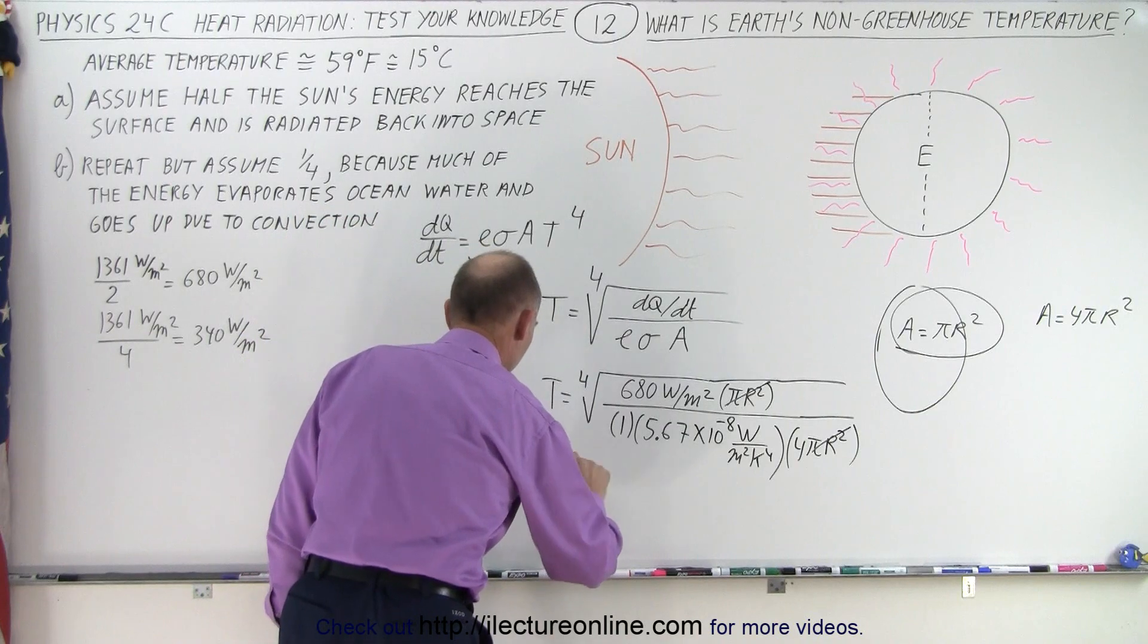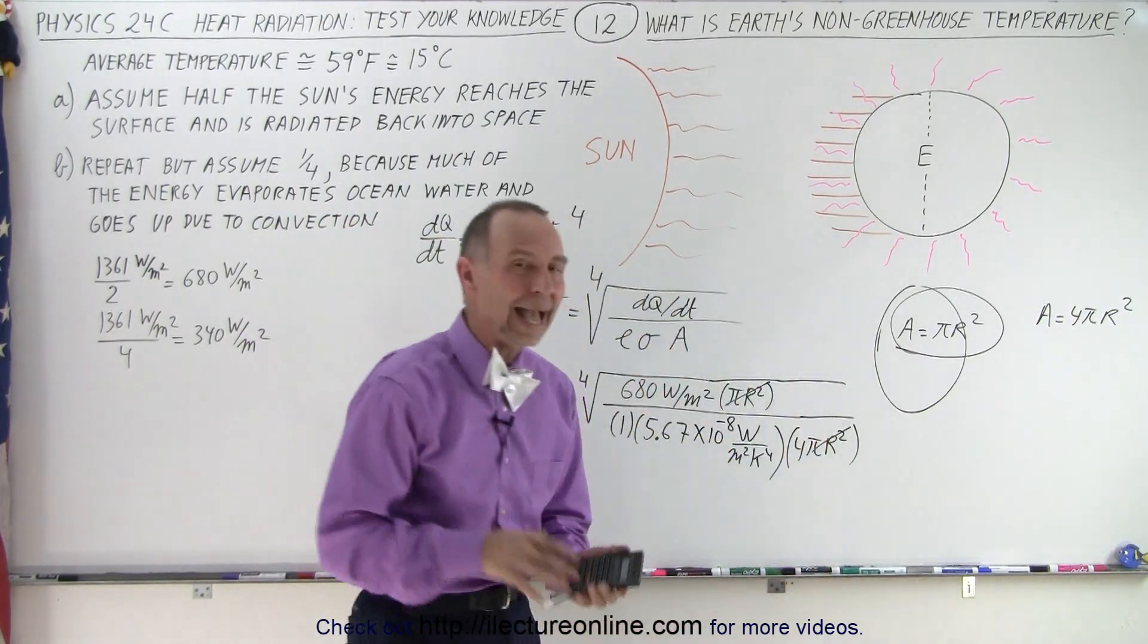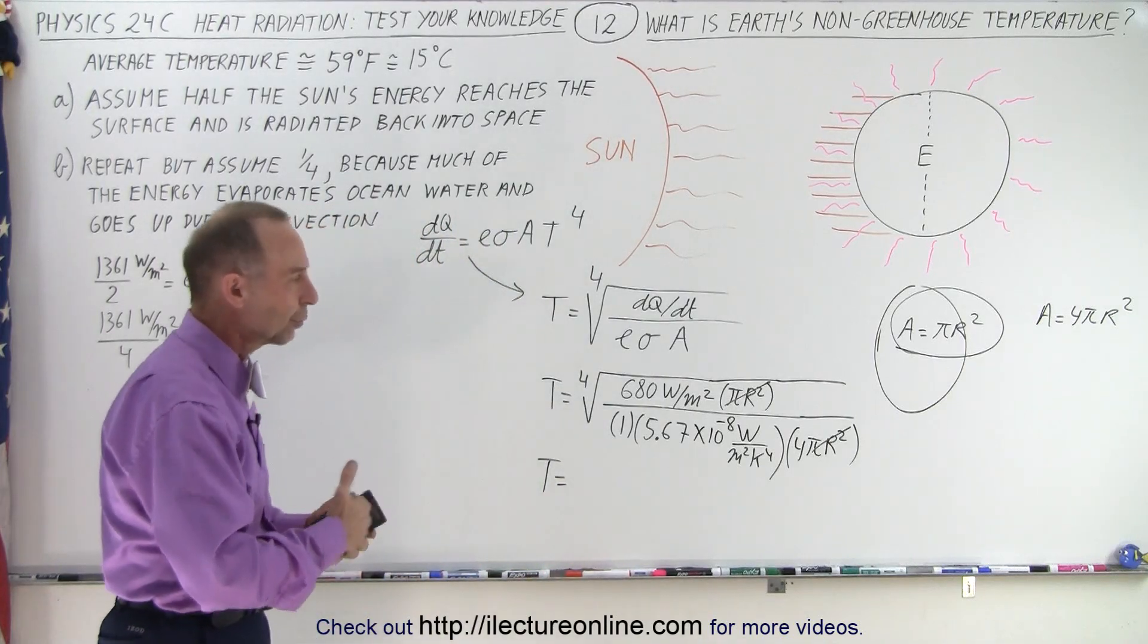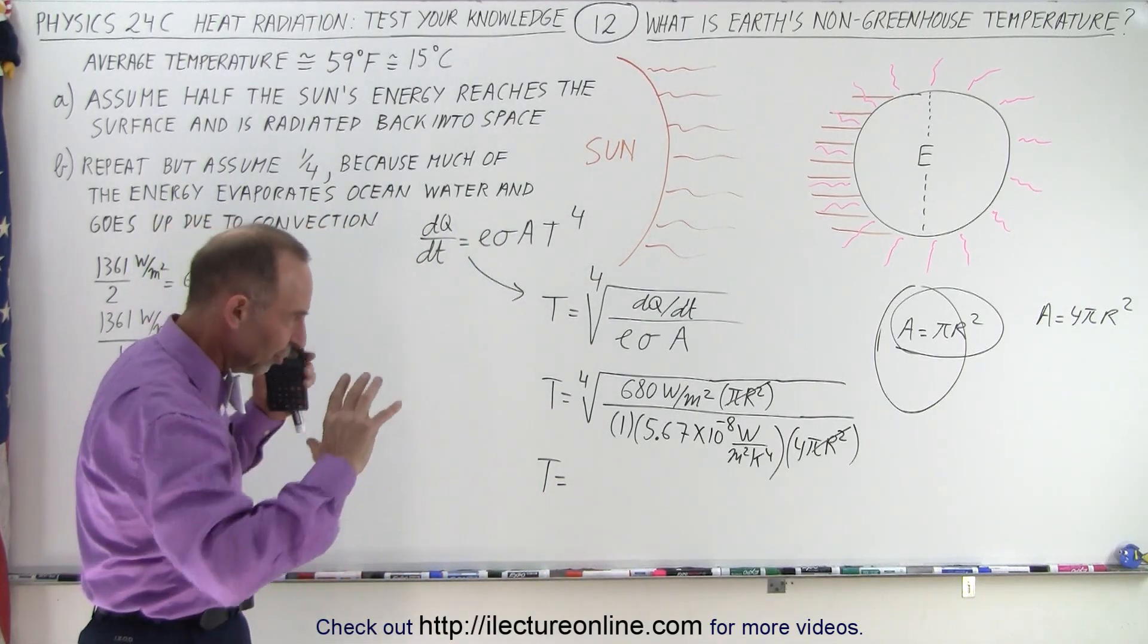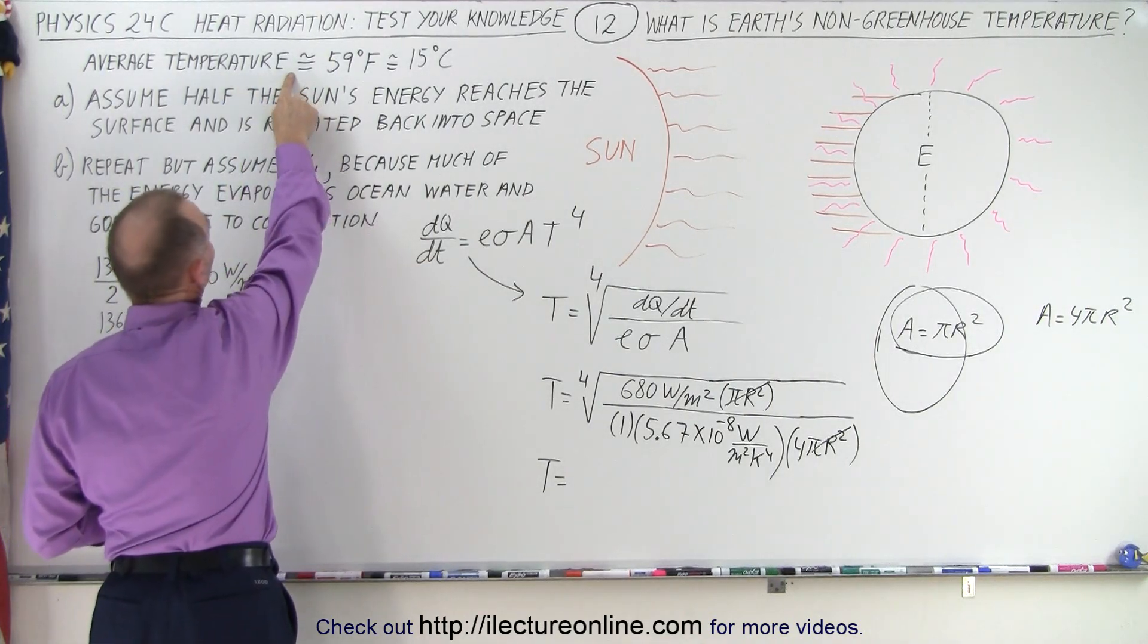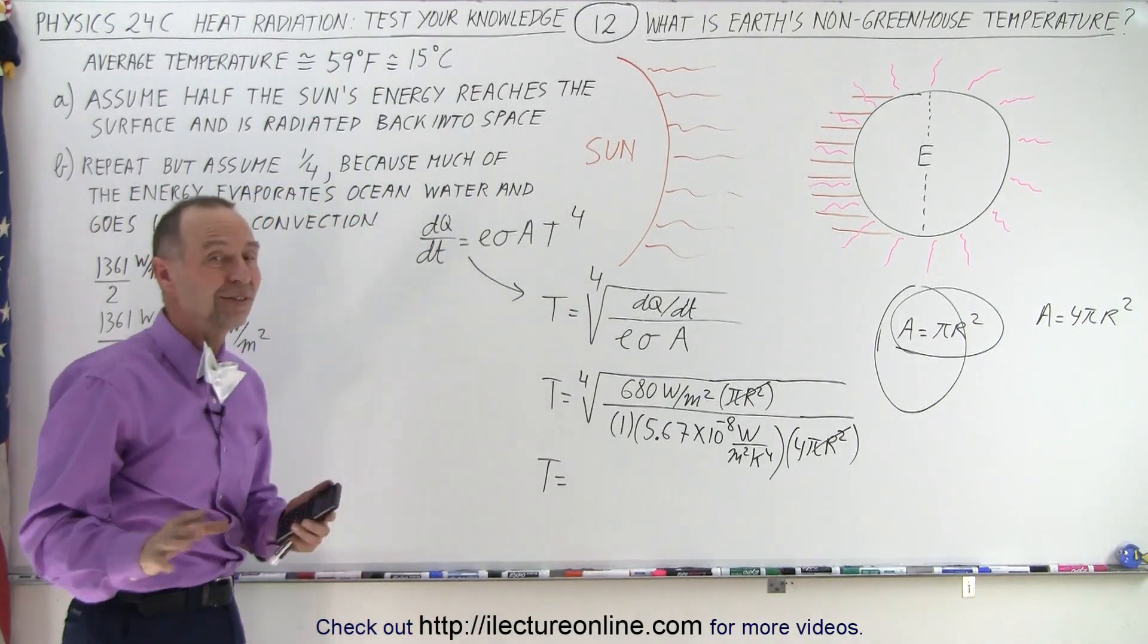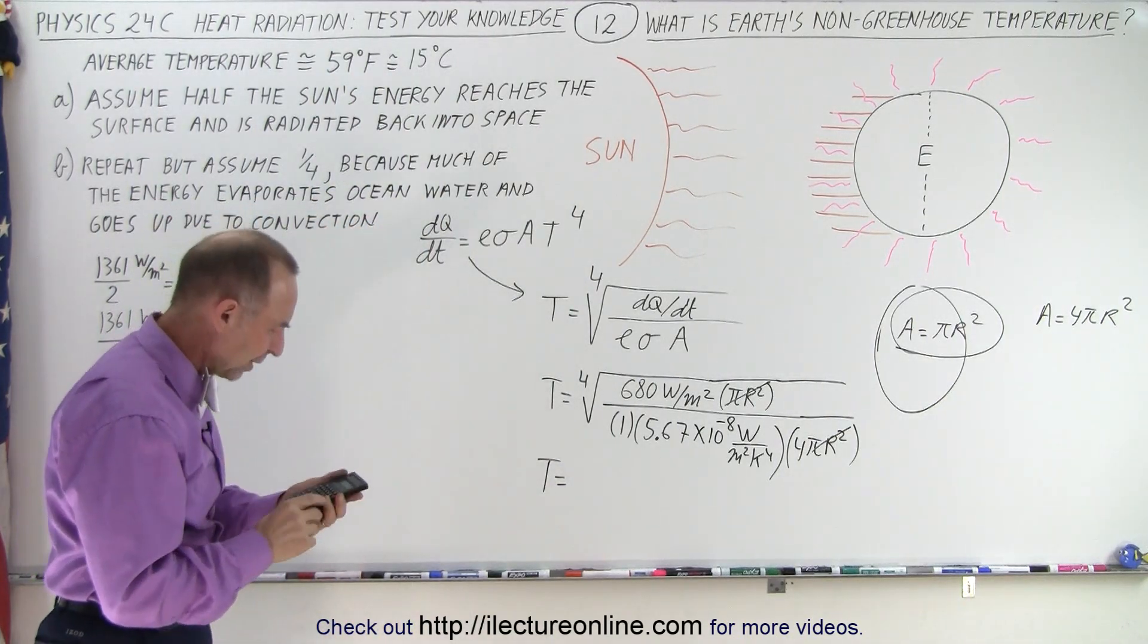And so the temperature is then going to be equal to that would be the average surface temperature of the earth. Of course it changes between winter summer but this is simply the average temperature relative to what it normally is with greenhouse gases which is 59 degrees Fahrenheit. That's about 15 degrees Celsius because of the greenhouse gases. So let's see what we get.